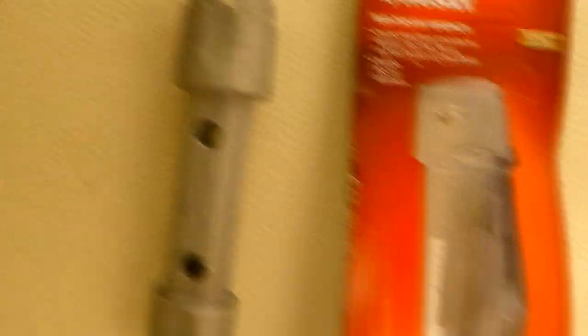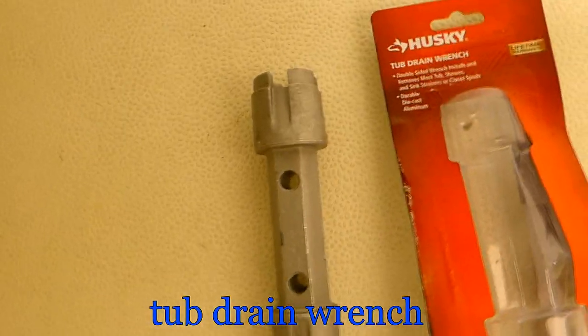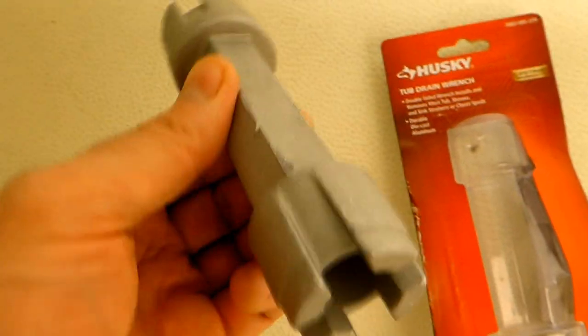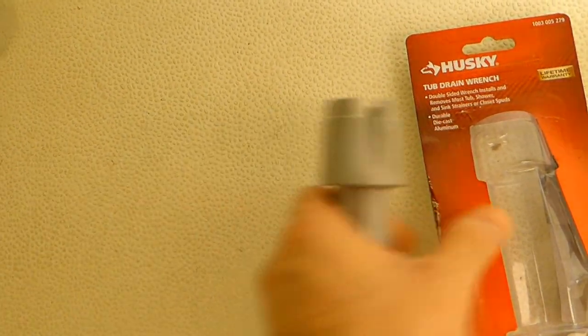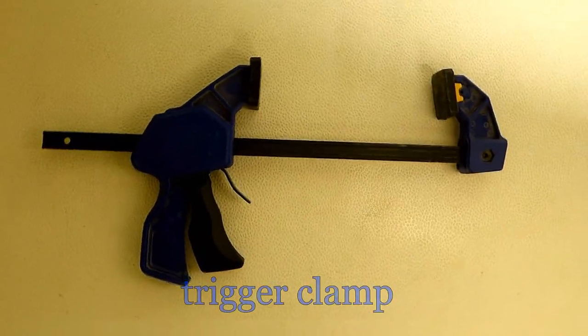So here's what I did. Of course, you need to have some kind of tub drain wrench. I purchased this one because I still have those crossbar leftovers inside of that drain shoe.